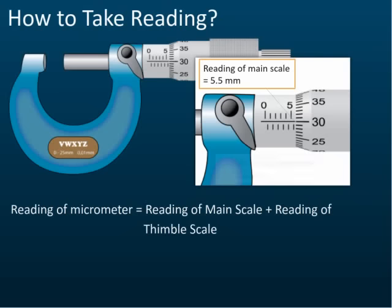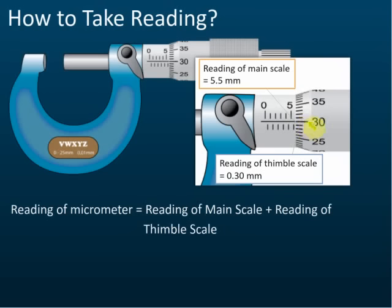Now for the thimble scale, we look at which line coincides with the straight reference line on the main scale. Here it is 30 — it coincides with the straight line. Each division represents 0.01mm, so 30 means 0.30mm.